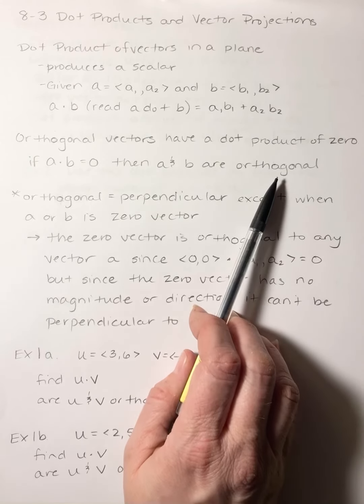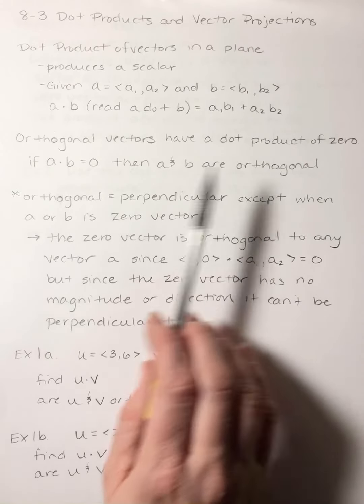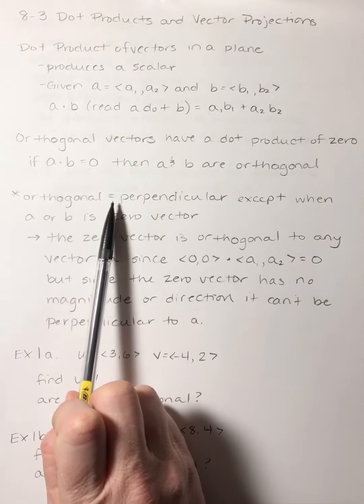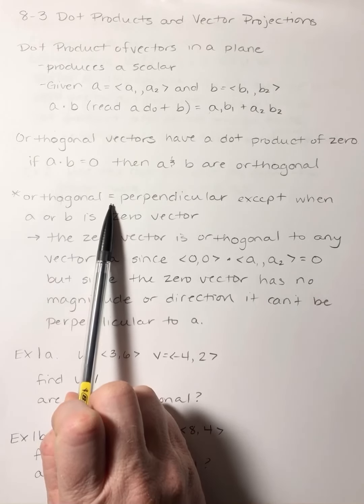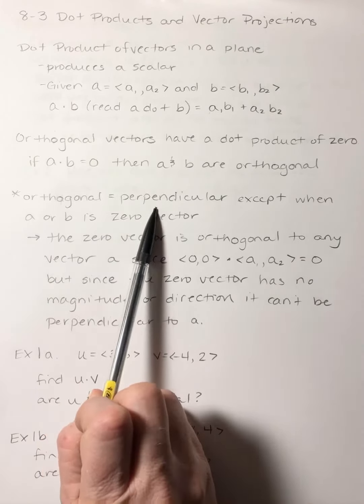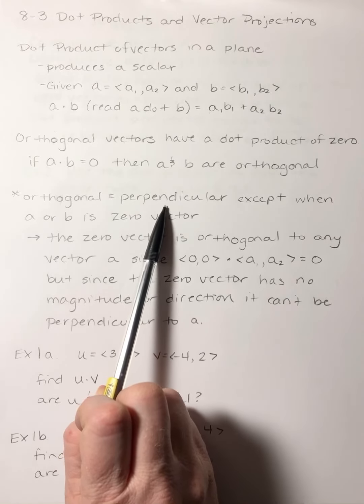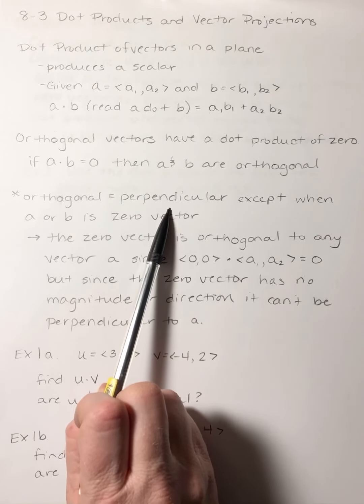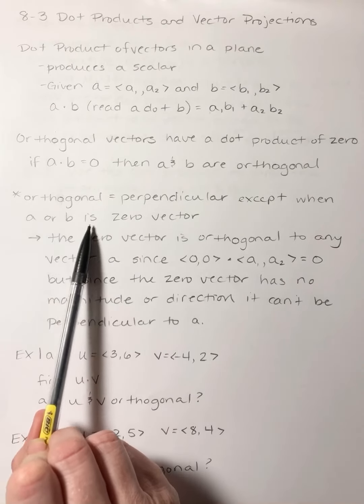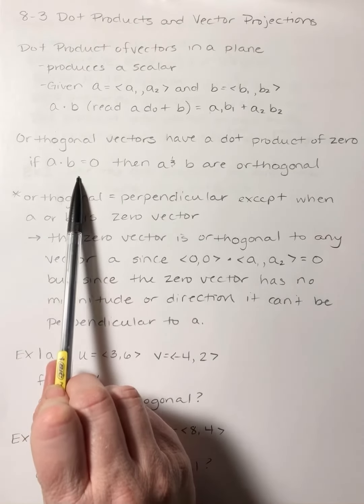So why the new word orthogonal? Orthogonal for most practical purposes means perpendicular, except there's one situation where that's not true. That's when either a or b are a zero vector.